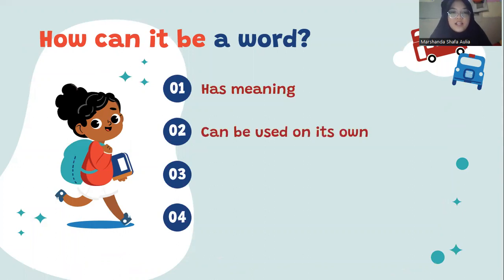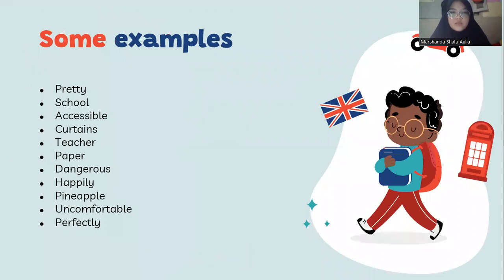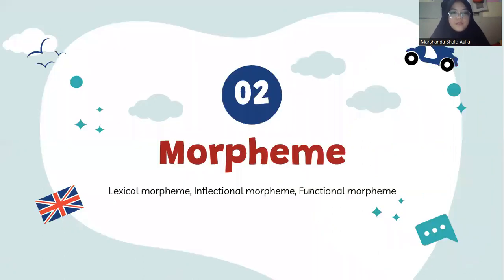The second criteria is that it can be used on its own. Third, it is uninterruptible. And the last one is that the word makes some sort of sense. There are some examples: a word could consist of a single base word, or it could have prefixes or suffixes added to it.